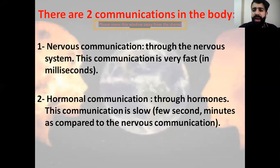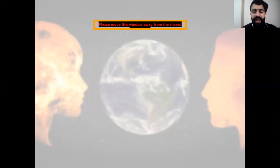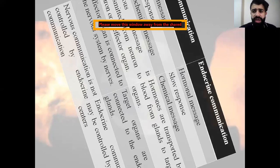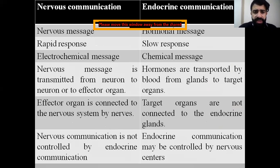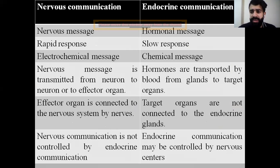We have two different types of communication inside the body: nervous communication and hormonal communication. The hormonal communication is slow compared to the nervous system which is very fast. We have different characteristics about each, and these differences are summarized in a table where the nervous communication occurs through a nervous message whereas the endocrine occurs through a hormonal message — the secretion of hormones. So it's a rapid response for nervous while it's a slow response for the endocrine.